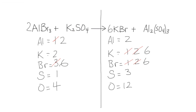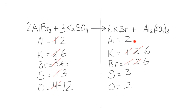Since we have two potassiums per formula unit, putting a three out front gives us two times three equals six potassiums — now potassium is balanced. But that coefficient of three also affects the sulfur, giving us three sulfurs, and it affects the oxygen: four times three gives us twelve oxygens. Going through the check: aluminum is okay, potassium is good, bromine is good, sulfur is good, and oxygen is good.